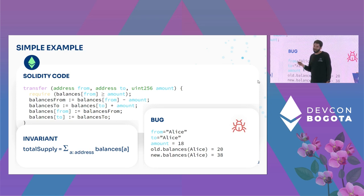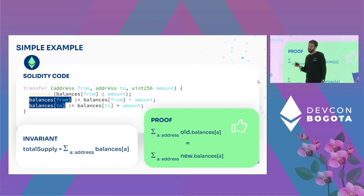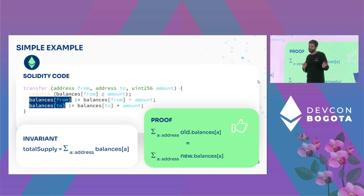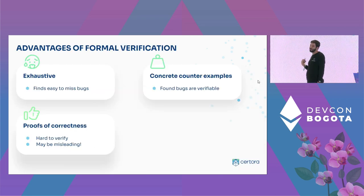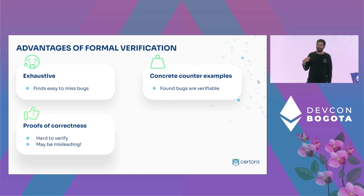If we fix that Solidity code to an implementation that doesn't contain the bug, we'll actually get a proof. That proof means the sum of balances before and after the transfer is equal, and we can be sure it's true no matter which addresses or amount we've chosen. That's one of the key advantages of formal verification: exhaustiveness. We're not checking for a specific set of inputs but covering the entire input space, allowing us to find bugs that are often missed by humans.